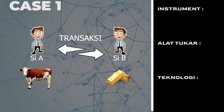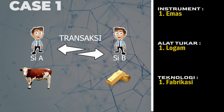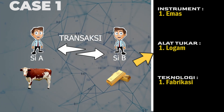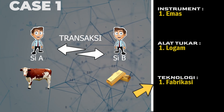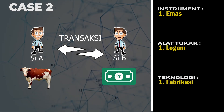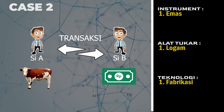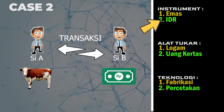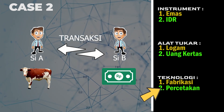si B memiliki emas untuk ditukarkan. Kita perhatikan bahwa instrumennya adalah emas, alat tukarnya yaitu logam, dan teknologi yang dipakai adalah fabrikasi. Untuk kasus kedua, si B memiliki uang rupiah. Instrumennya adalah IDR, alat tukarnya adalah uang kertas, dan teknologinya adalah percetakan.